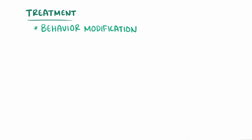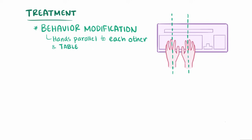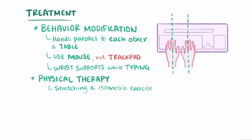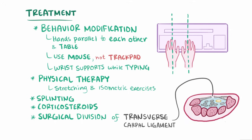One major form of treatment is behavior modification, many of which are associated with hand positions while typing, which is a common cause of the problem. Changes like keeping the axis of the hands parallel to each other and the table, using a computer mouse instead of a trackpad, and wearing wrist supports and splints while typing can all be super helpful. Physical therapy in the form of stretching and isometric exercises can also help relieve symptoms. In more serious cases, it might be treated non-surgically by splinting or corticosteroid injection, but the definitive management often requires surgical division of the transverse carpal ligament to help open up the carpal tunnel and relieve the pressure on the median nerve.